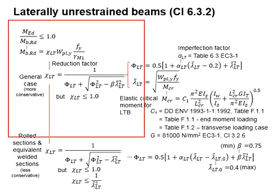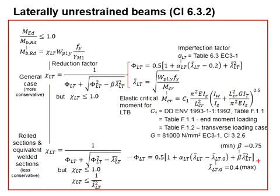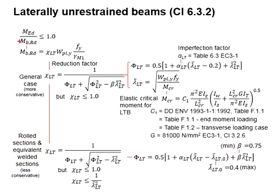This slide shows the design process of an unrestrained beam. The moment resistance should be greater than the load. Therefore, the ratio of M_Ed divided by M_b,Rd should be less than 1.0.